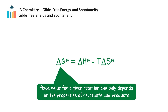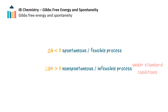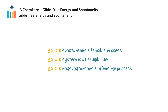The sign of delta G indicates whether a reaction is spontaneous or not. When delta G is negative, this indicates a spontaneous reaction — we could say it is feasible, it is likely to occur. A standard delta G value less than zero means the reaction is spontaneous under standard conditions. A positive value indicates a non-spontaneous reaction under standard conditions. When delta G under non-standard conditions is equal to zero, the reaction is at equilibrium. Delta G standard, however, is not necessarily always equal to zero at equilibrium.